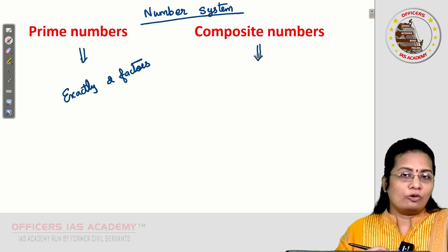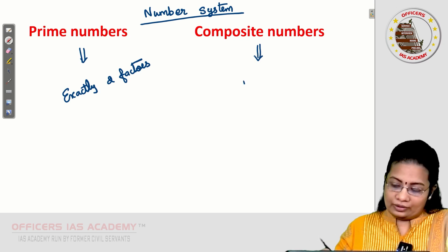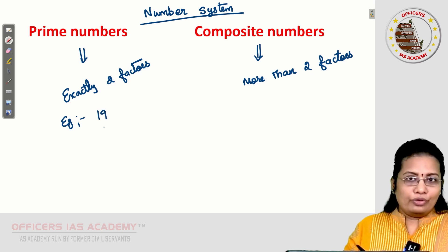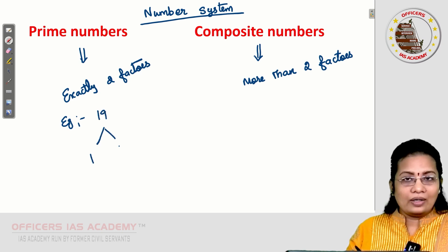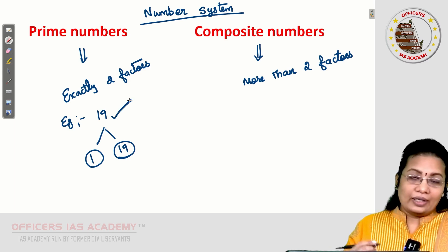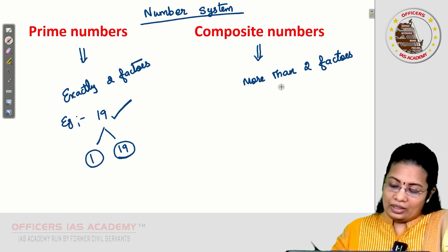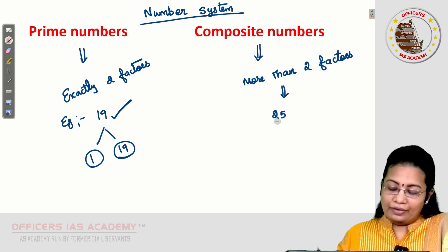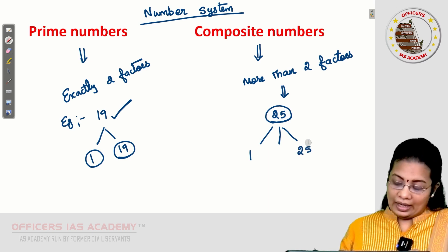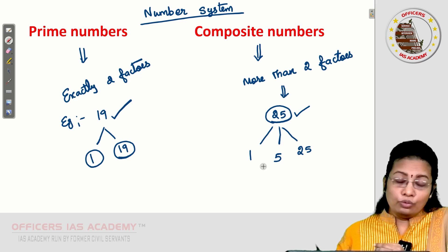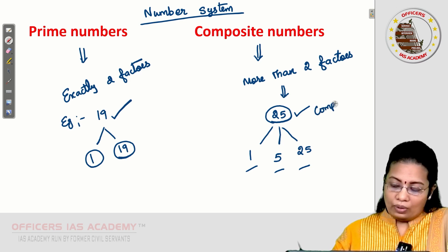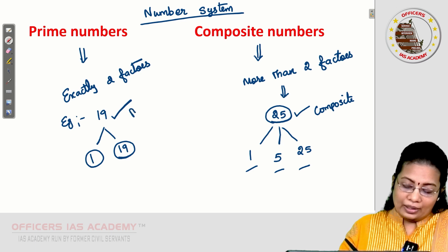Composite numbers are those having more than two factors. For example, 19 has factors 1 and 19 — exactly two factors — so 19 is a prime number. For composite number, take 25: its factors are 1, 5, and 25 — more than two factors — so 25 is a composite number.